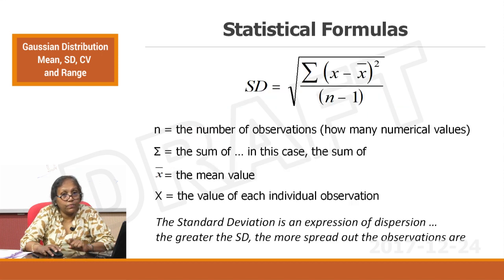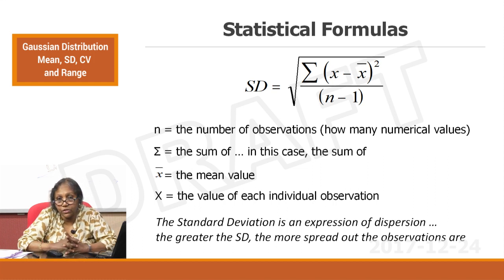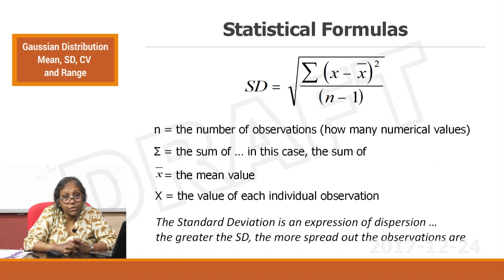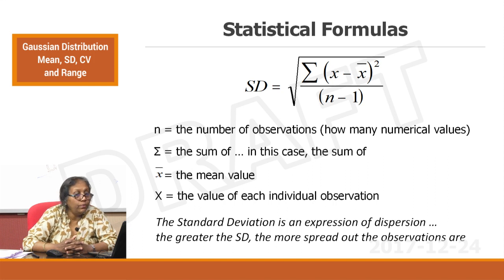The calculation of standard deviation is done using this formula: SD equals the square root of the sum of the differences between the data points and the mean squared, divided by n minus 1. These calculations are very easily done on Excel sheets and will be demonstrated in the video on using computers.